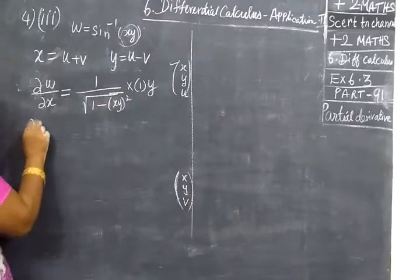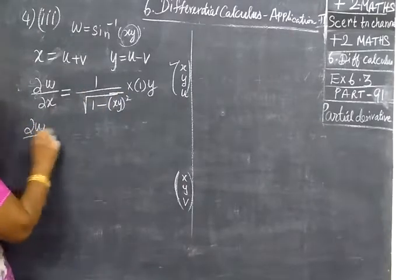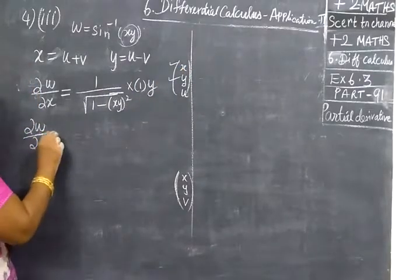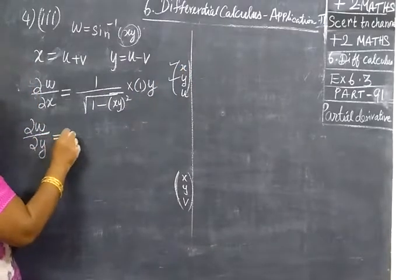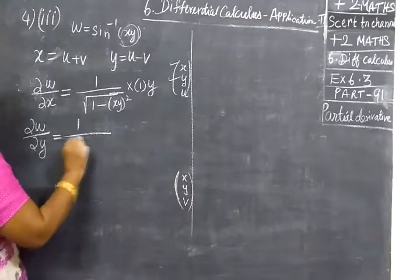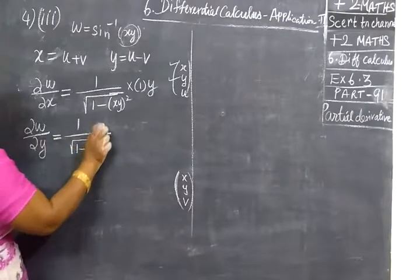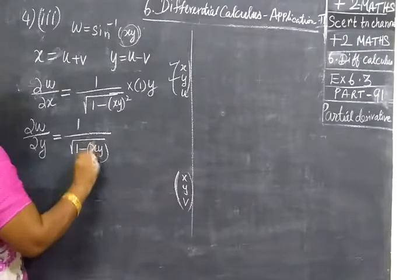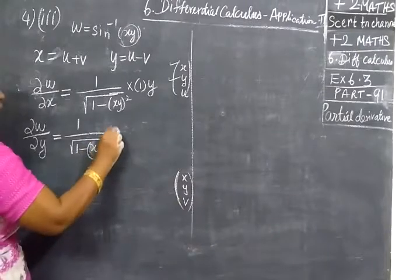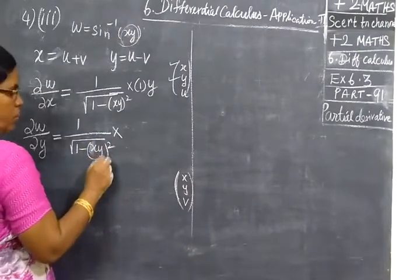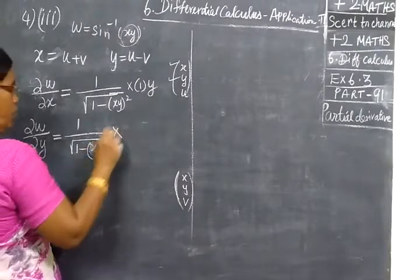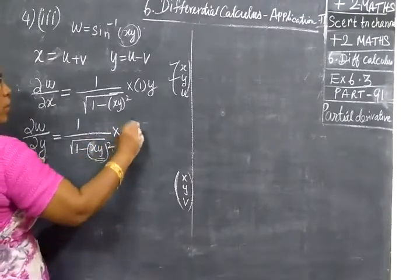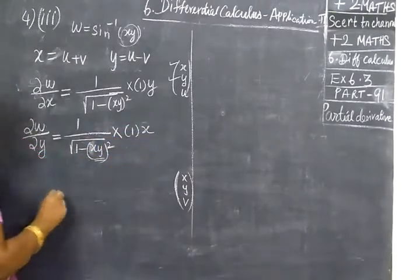Next we are writing do-W by do-over. With respect to y, equal to sine inverse x, 1 by root of 1 minus x squared — that is x-y-y goes to f — into inner function. Differentiation with respect to y. y-1 is 1, x is 1 as it is.